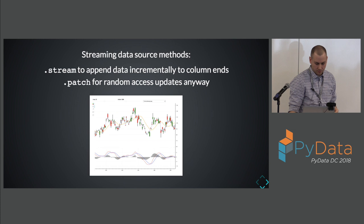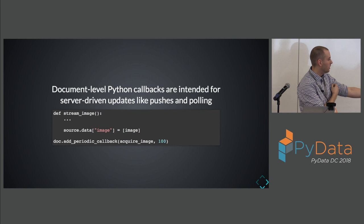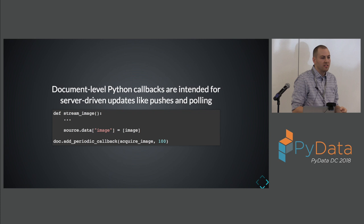Probably the most important part is the collection of Python objects we call a document. You're able to make document-level callbacks. One example is a periodic callback — for our final demo, we'll get a new image every so many milliseconds. You're also able to do push-based callbacks. If you have some sort of RPC or you're reading off a queue and waiting for new events, you're able to arbitrarily push new messages to the front end.